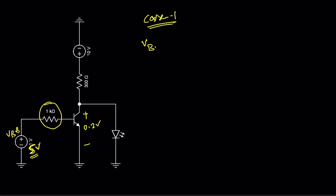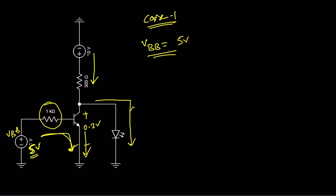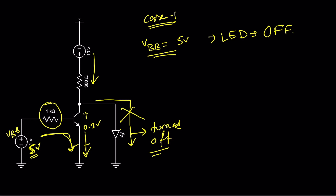Case 1: when VBB is 5 volt. When VBB is 5 volt, base current flows through the transistor, turning the transistor on. Collector current flows through the 300 ohm resistance and through the transistor. This means there is no current flow through the LED, so the LED is turned off. Therefore, when VBB is 5 volt, the LED is off.